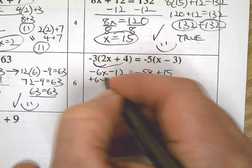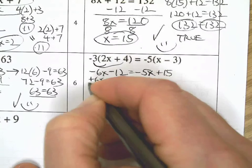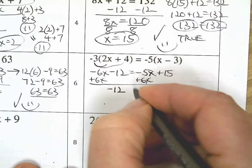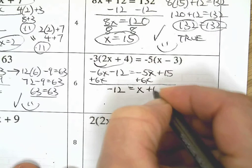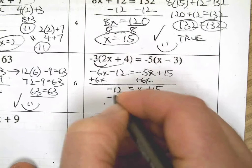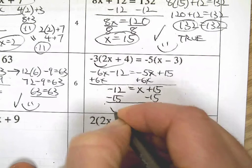Now I'm going to add 6x to both sides. I always start with the x and I want to get it positive. That's my strategy. You're welcome to steal my strategy or you can use your own.